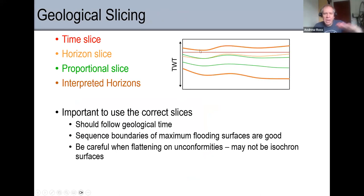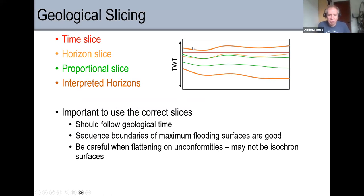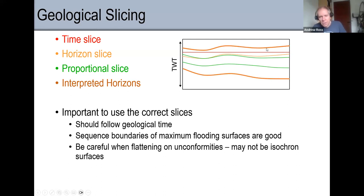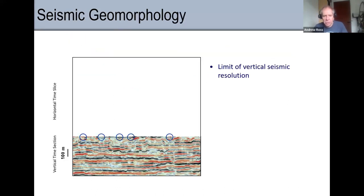The reason for the crossing channels is that a time slice is time relative to the surface, but my channels were deposited in geological time. I need to go up and down on my time slice to find the channels. There are different ways to do it: a horizon slice following the top surface, following the bottom surface, proportional slices, or flattening the horizon. The idea is to get things back to geological time.